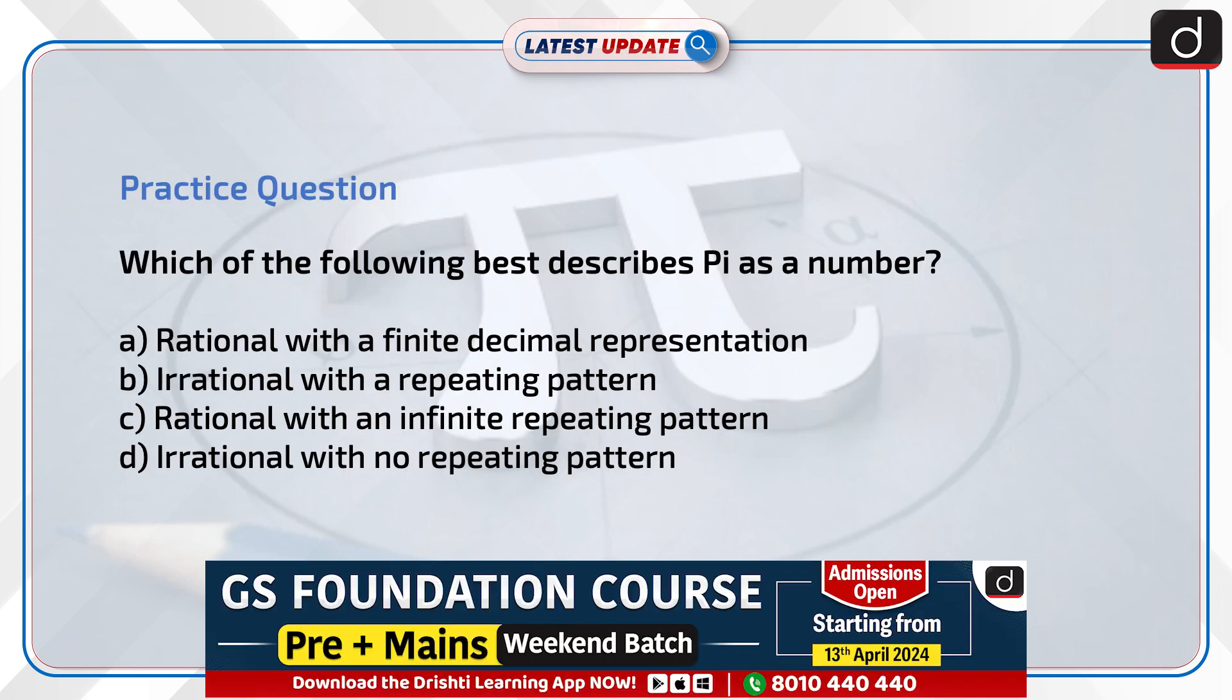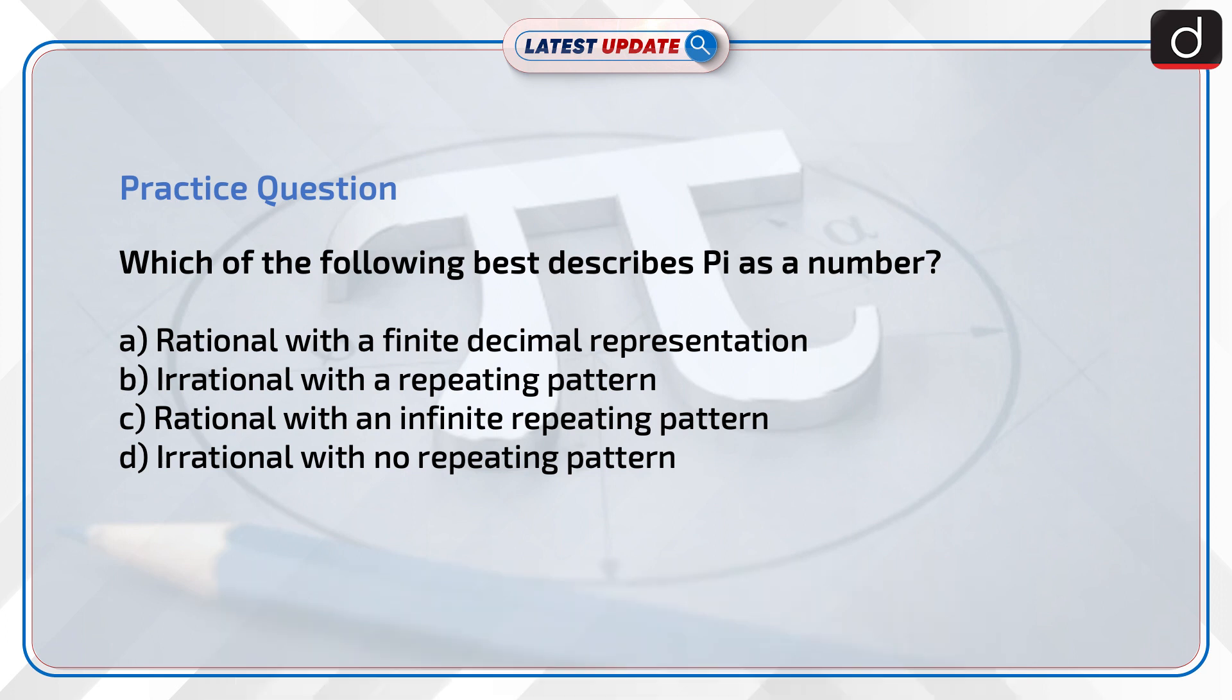Now's the time to test your knowledge. The question is, which of the following best describes Pi as a number? Rational with a finite decimal representation? Irrational with a repeating pattern? Rational with an infinite repeating pattern? Or Irrational with no repeating pattern? Send the answer to this question in the comment section.